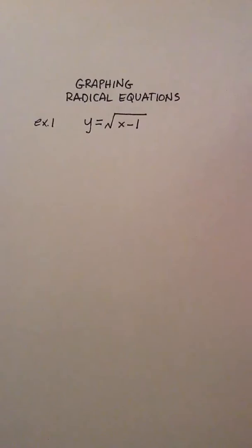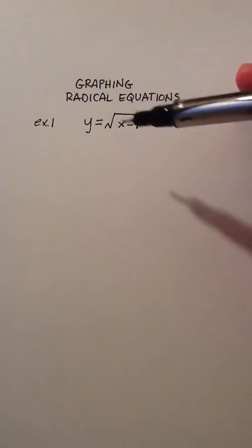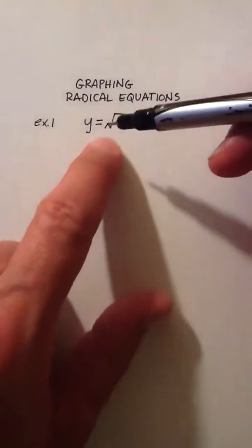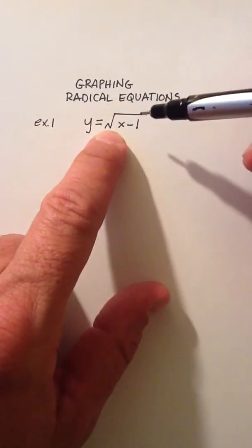Now, remember what a radical equation is. It is an equation that has a single radical in it, or maybe a double radical. The radical could be a square root like this one. It could be a cube root.